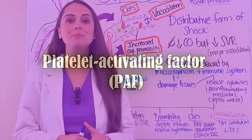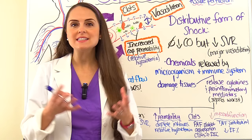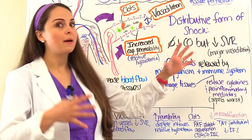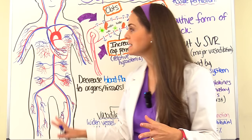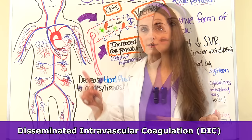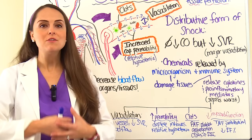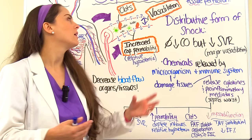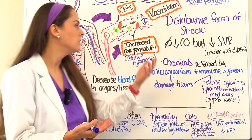To make things worse, platelet activating factor is also released, causing platelet aggregation. With inflammation and damage occurring in these vessels, small clots start forming system-wide. If we're forming clots system-wide, it uses up our clotting factors, putting the patient at risk for DIC — where they can bleed from every orifice. Watch for oozing of blood. These clots create an even greater obstacle for blood flow through our microcirculation.